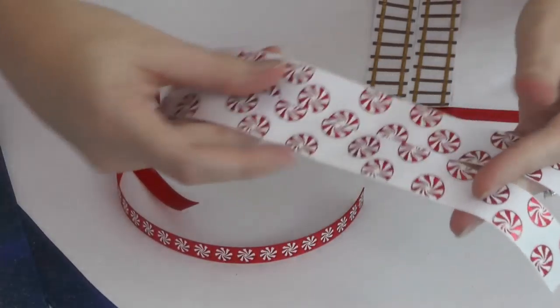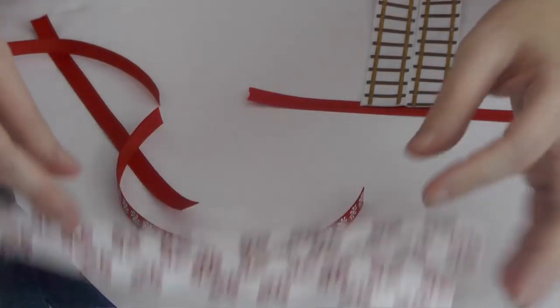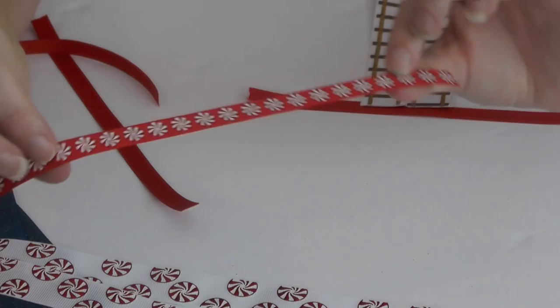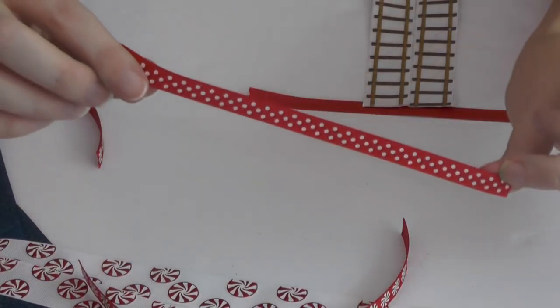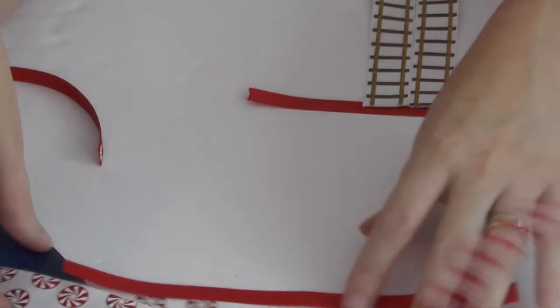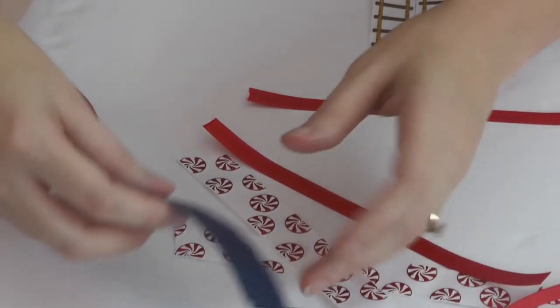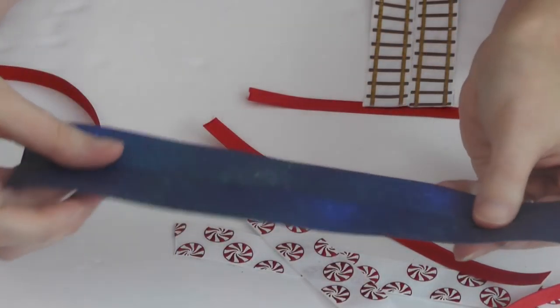And then I've got two pieces of this candy print. I've got some 3 1/8 inch candy print, as well as some polka dots. So what I'm going to do is I'm going to take the longer two pieces, which happen to be these blue pieces.